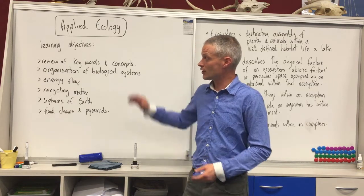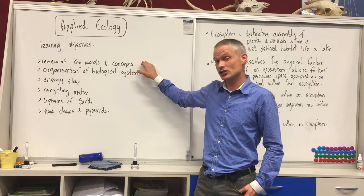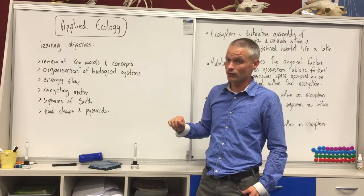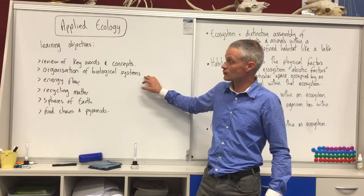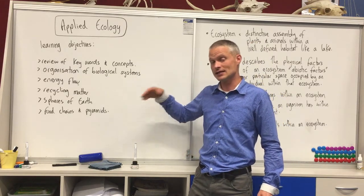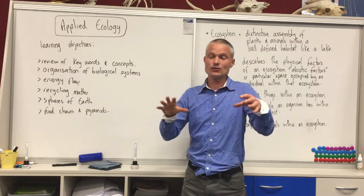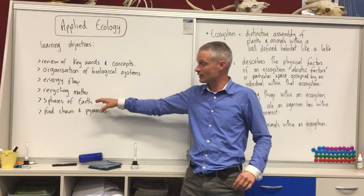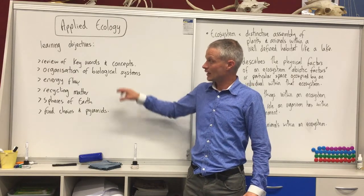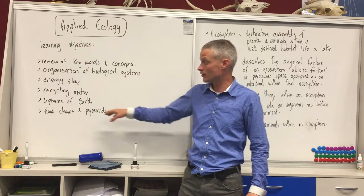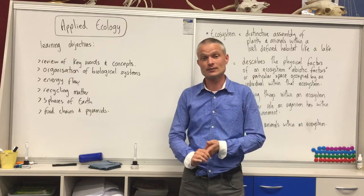So in this module I'm going to go through a few things. I'll do a quick review of some of the keywords — there are more in the ebook so I won't go through them all, just touch on the concepts we'll review. Then there are clips covering how biological systems are organized, how energy flows through those systems and matter is recycled, how we can understand the organization of Earth by putting it into different spheres, and how food chains and food pyramids help map out the complexity of feeding relationships in those systems.